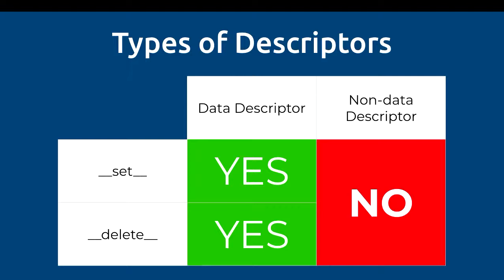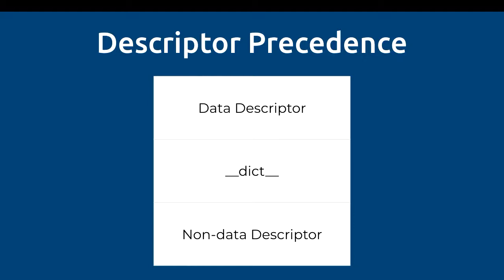There are two types of descriptors covered in the Python documentation: data descriptors and non-data descriptors. Data descriptors are any object that implements __set__, __delete__, or either. Non-data descriptors are any descriptor that doesn't implement __set__ or __delete__ — so they only implement __get__. Descriptors follow a descriptor precedence during the attribute lookup process. First it checks: is this attribute a data descriptor? If so, it calls the corresponding method. If not, it checks the instance's dictionary. If not there, and it is a non-data descriptor, it calls the non-data descriptor.